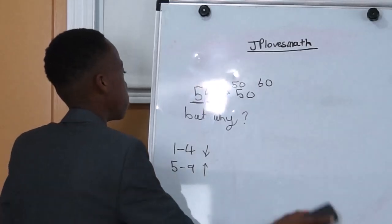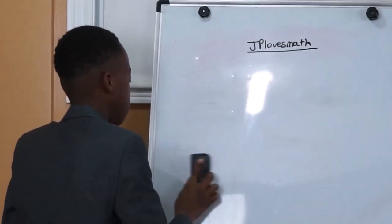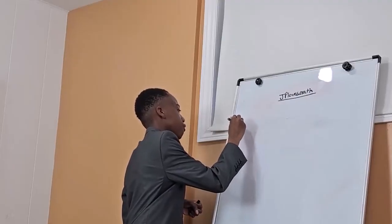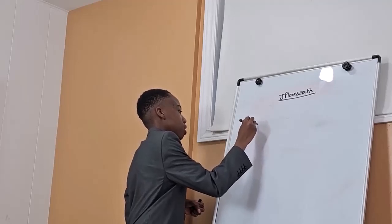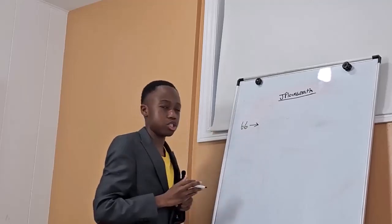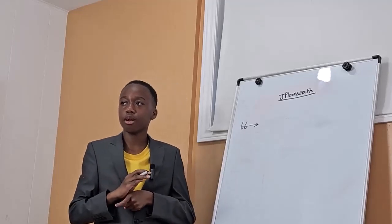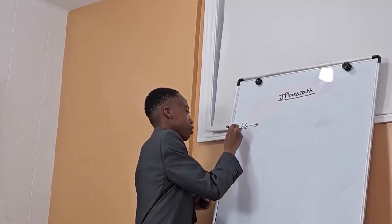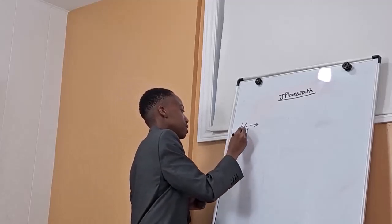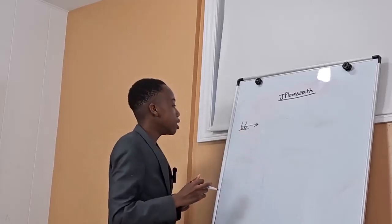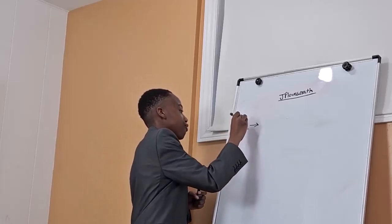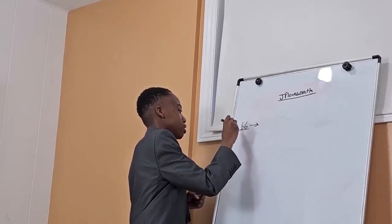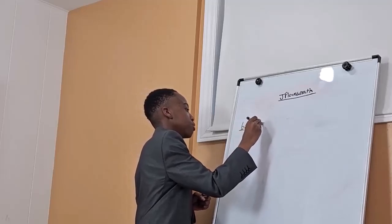Here's another example. What if I wrote down 66? What would we round it to? Well, you can see right here that we're rounding to the nearest 10. And 6 is in the 5 to 9 category. So the 6 tells us that we will have to round up to 70.